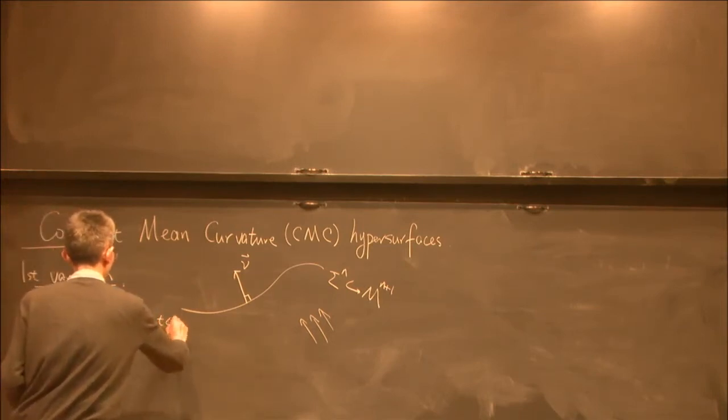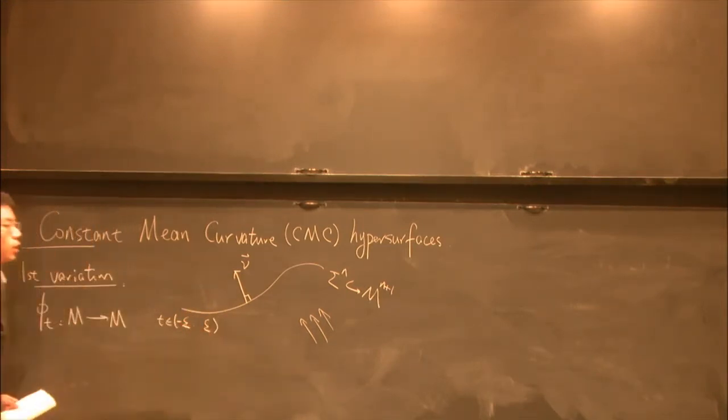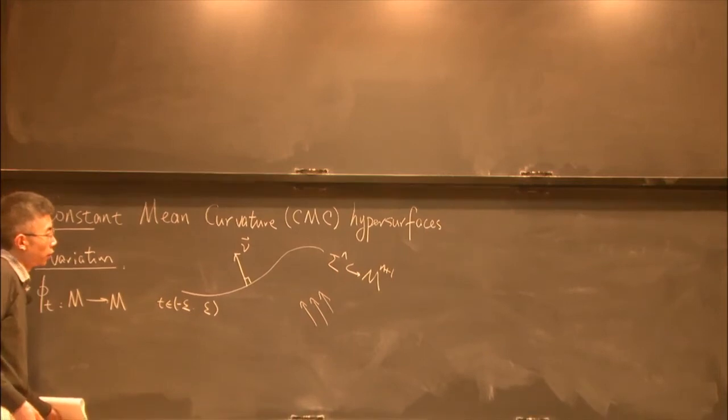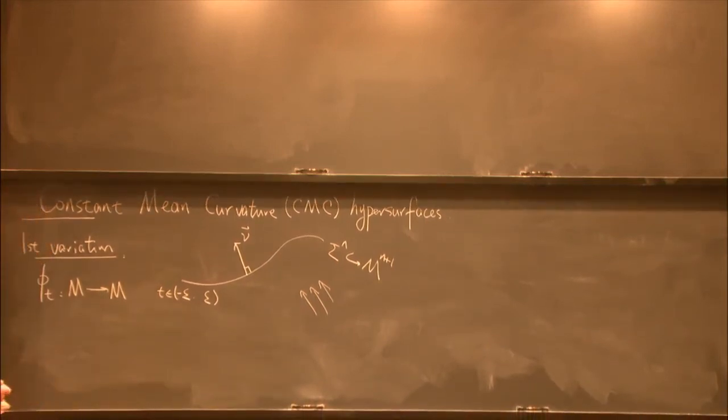And t is small. So each of them is a diffeomorphism. This is a one-parameter family of diffeomorphisms. So we can calculate the change of the area for the hypersurface.